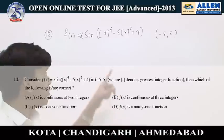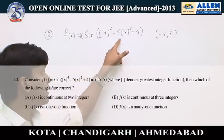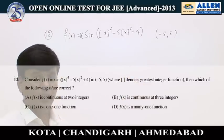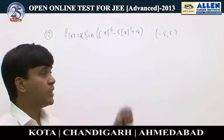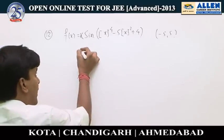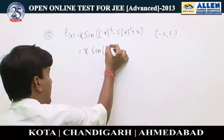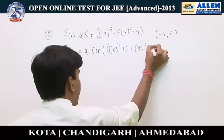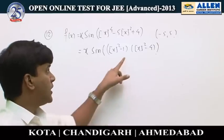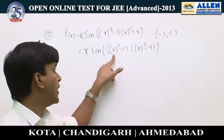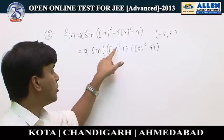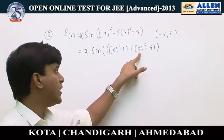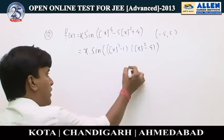In question number 12, f(x) equals x times sin([x]⁴ minus 5[x]² plus 4), where [x] denotes the greatest integer function. This factorizes as x times sin(([x]² minus 1)([x]² minus 4)). The function is many-to-one: for x between 1 and 2, [x] equals 1 making the expression 0; similarly for x between 2 and 3.